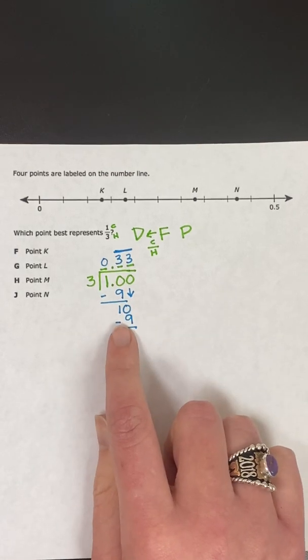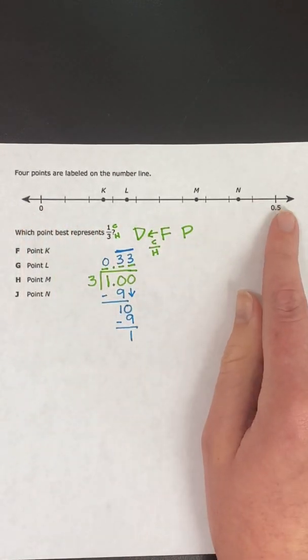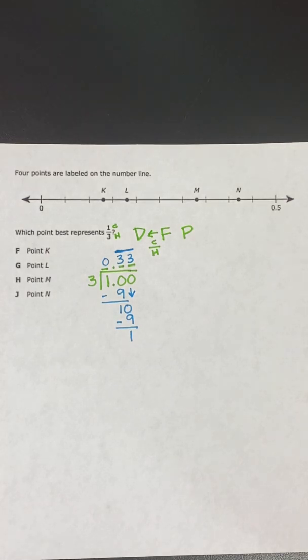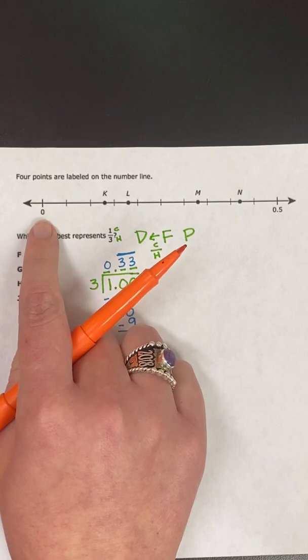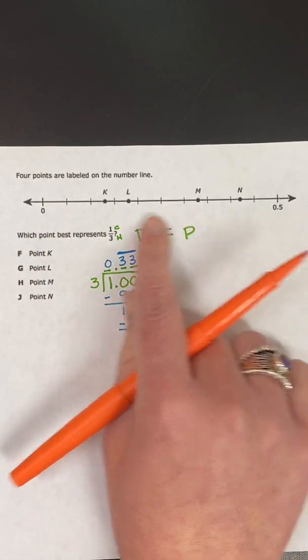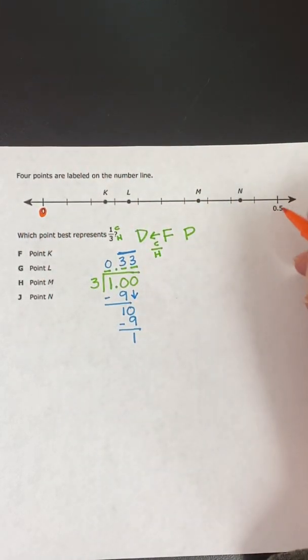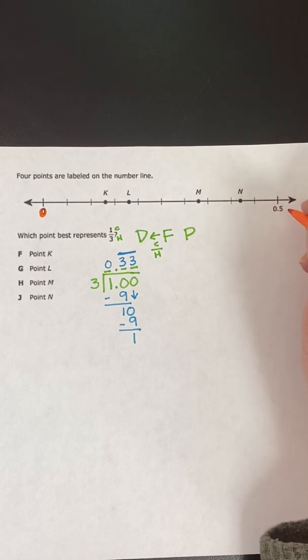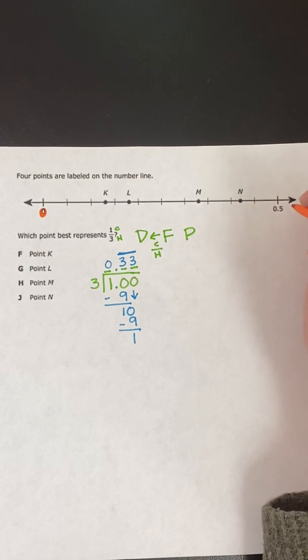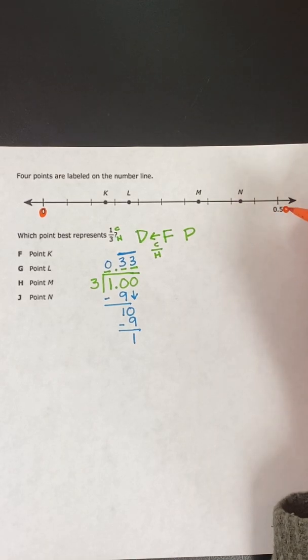So now that I have this as a decimal, I can put it on my number line. But before I do that, I have to think about what my number line is telling me. So over here, I have zero. Zero is not in the middle, it's over here. And then at the other end, I have zero point five. But I'm going to think of this as money. So if I think of money, I have to have two decimal places. So I know I can add a zero back there and think of this as point fifty or fifty cents.